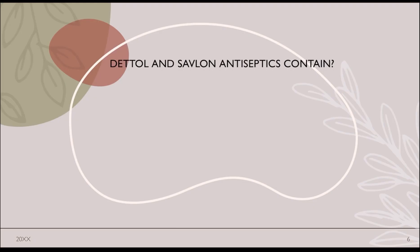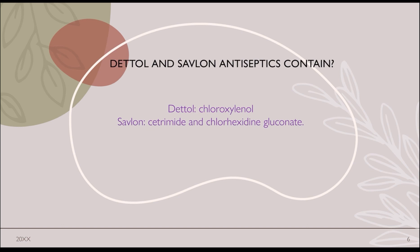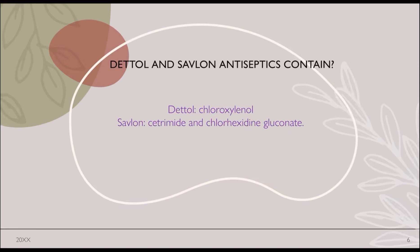Moving on to the next question: what do Dettol and Savlon antiseptics contain? Dettol contains chloroxylenol, which is used for skin disinfection, and with alcohol it can be used for cleaning surgical instruments. Savlon contains cetrimide and chlorhexidine gluconate. Cetrimide is used to treat wound cuts and minor burns and to protect against infection. Chlorhexidine gluconate is used for disinfection before surgery and to sterilize surgical instruments.